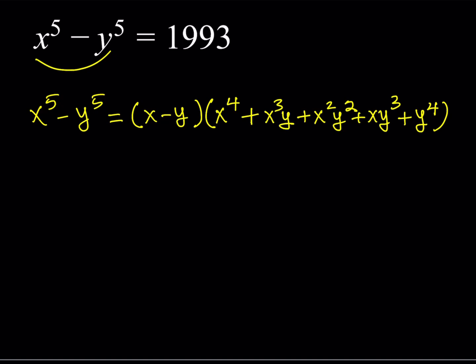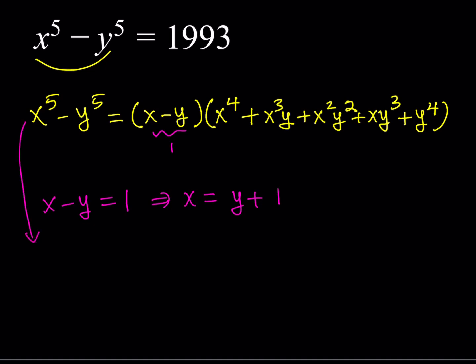We have two cases. Case 1: suppose x minus y equals 1. Since the product is prime, one of the factors must be 1. If x minus y equals 1, then x equals y plus 1. This means x and y are integers differing by 1 — for example, if y equals 1 then x equals 2, or if x equals 10 then y equals 9. We can substitute x equals y plus 1 into the original expression, which turns into y plus 1 to the fifth power minus y to the fifth power.